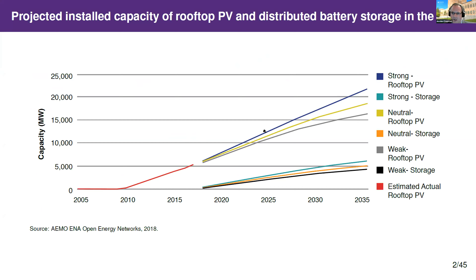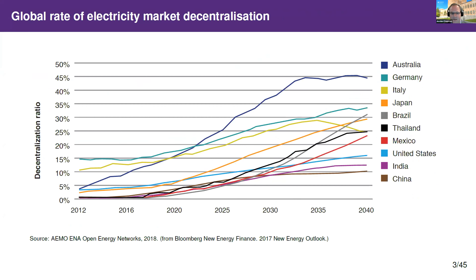This isn't just an Australian story — this is a global story. We can see that the global rate of market decentralisation, as driven by measures such as the number of prosumers — small users of energy that are generating their own supply — is growing around the world. Australia might be at the forefront of this, but it's just in the vanguard of a wave of technological change that's going to crash across all sorts of power systems in the near future.